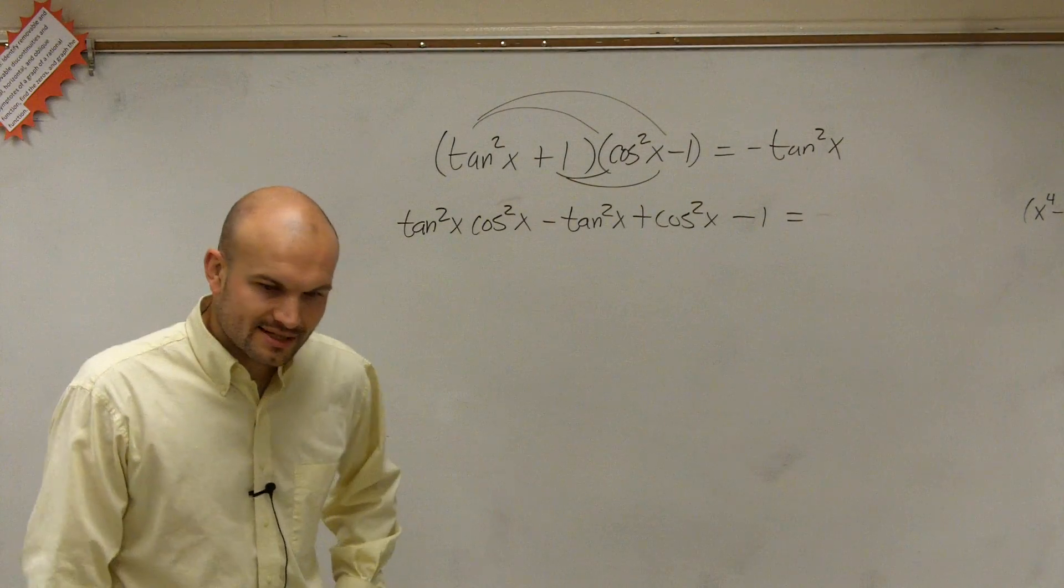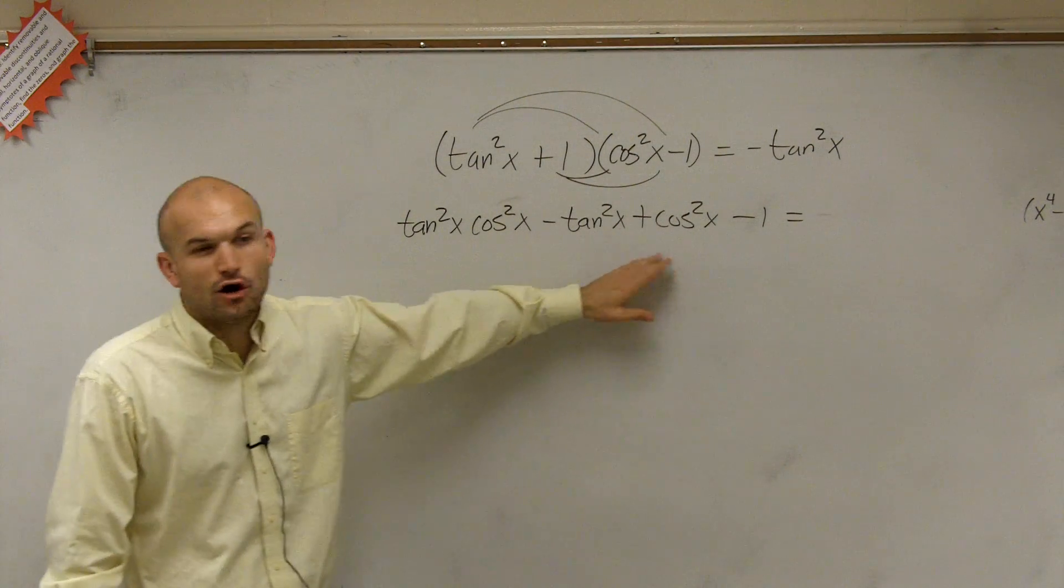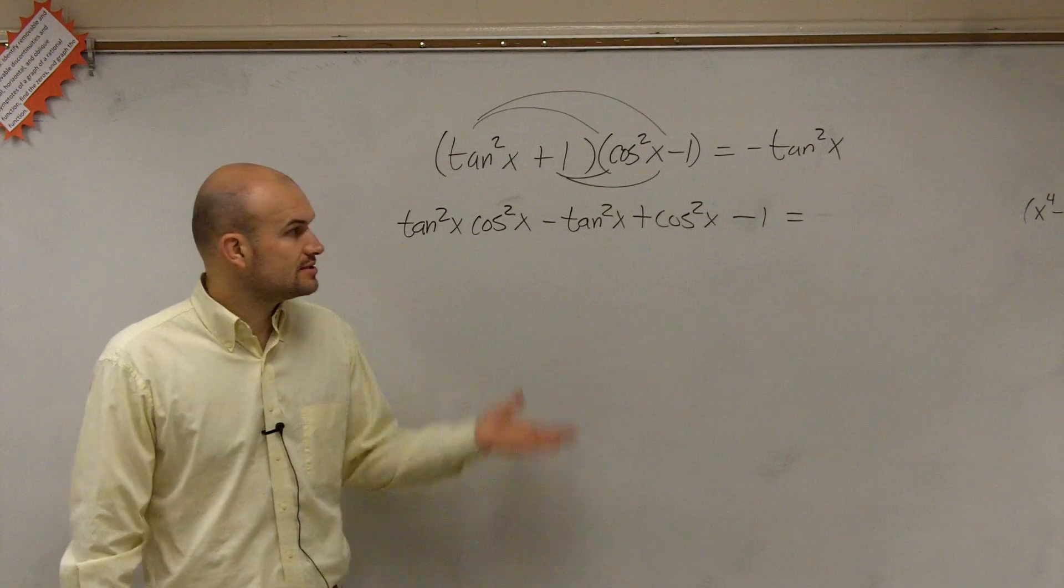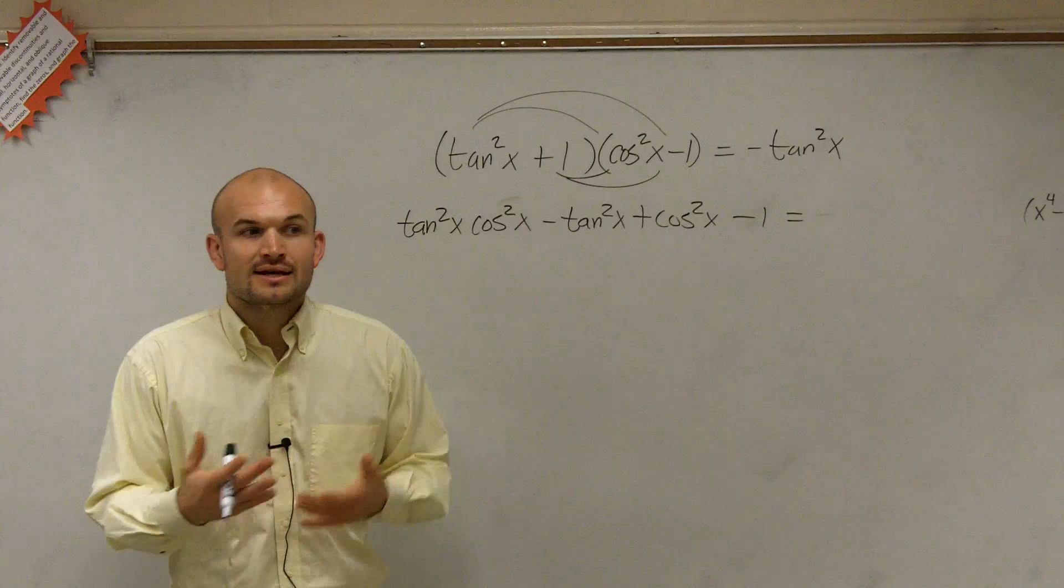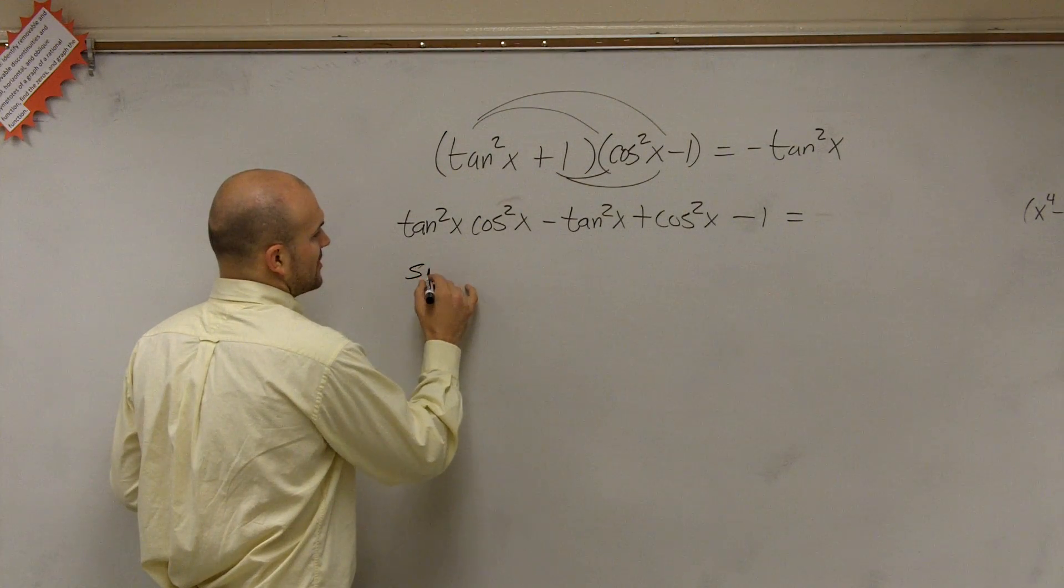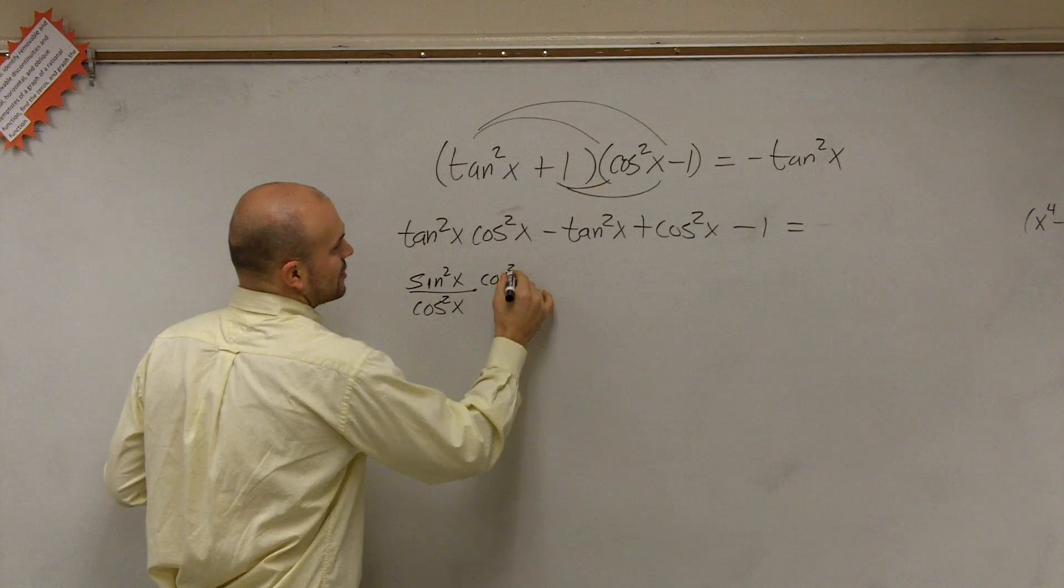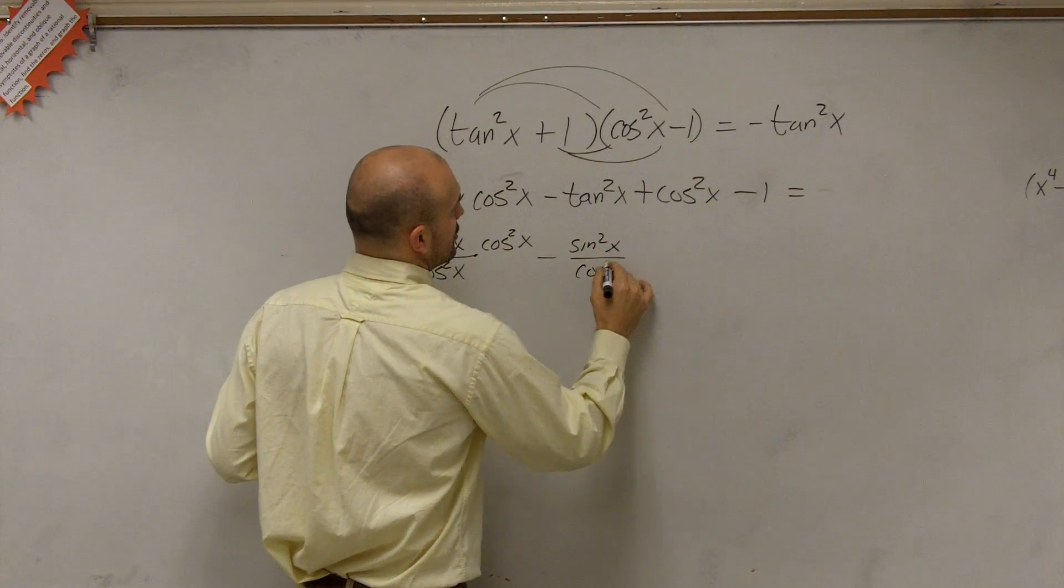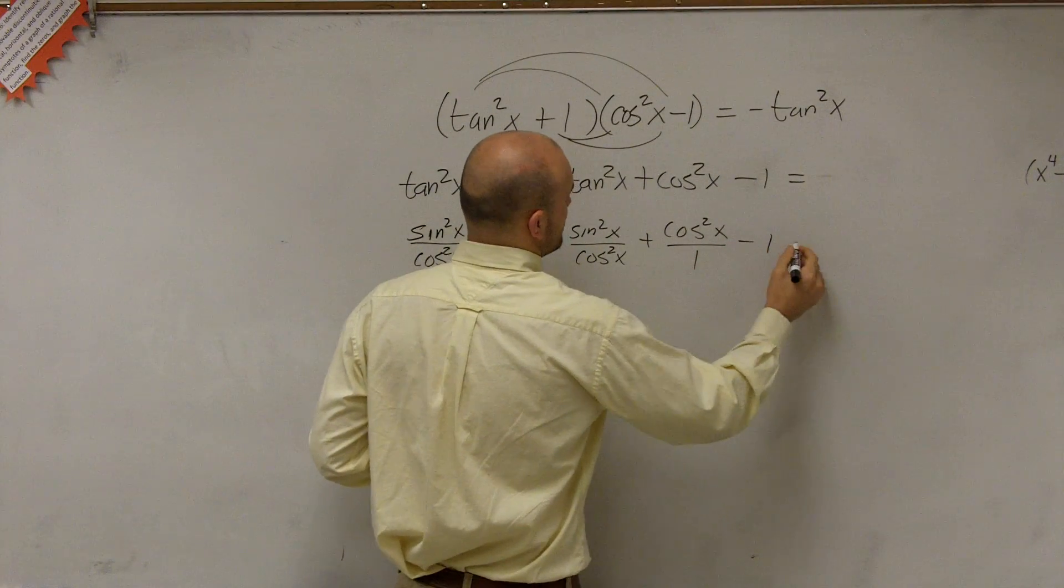The next thing that we're going to do is convert. We have to add all these terms that do not seem like they're like terms. So I'm going to convert to sine and cosine and see what kind of common denominators I might be able to get. So tangent squared is going to be sine squared over cosine squared of x times cosine squared of x minus sine squared of x over cosine squared of x plus cosine squared of x over 1 minus 1.